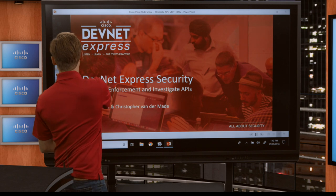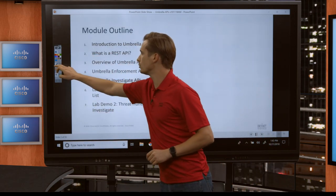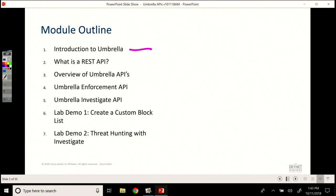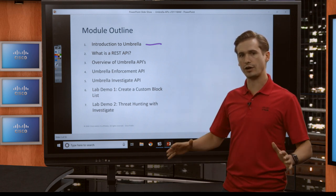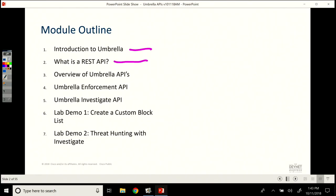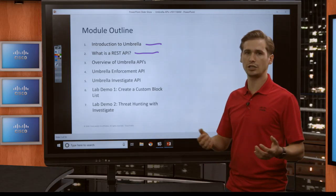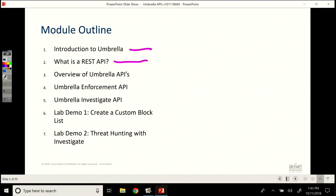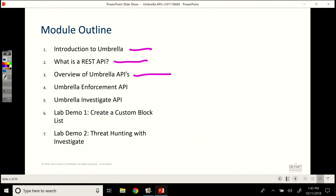Today we will talk about an Umbrella API module that I've created together with Veer. Basically, what we will cover is the Umbrella enforcement and the investigate API. This module contains multiple parts. As you'll see in this video series, you can review all of them. First, I'll show you what Umbrella is all about — a broad introduction to Umbrella, not a very deep dive, but it gives you a good view of what Umbrella does and how you can use these APIs. Then we'll talk about what a REST API is, going through the basics of REST API requests and how that relates to the Umbrella API. Then I'll give you an overview of all of the Umbrella APIs — the enforcement API and the investigate API, which we'll dive into a bit deeper.